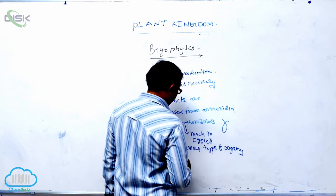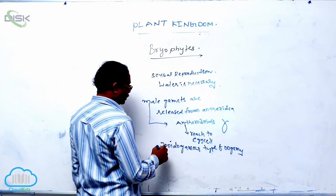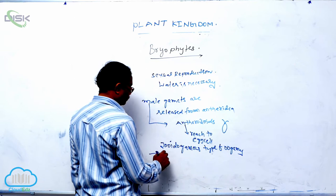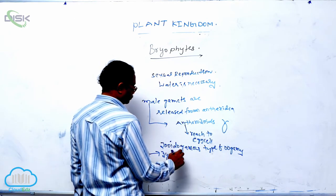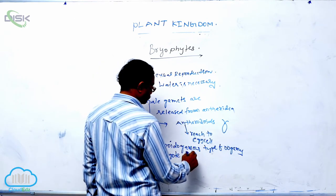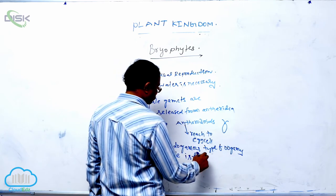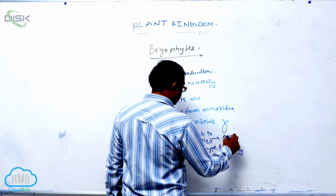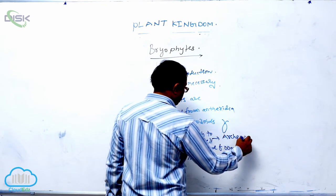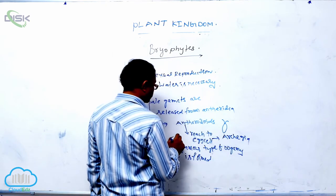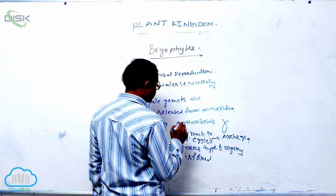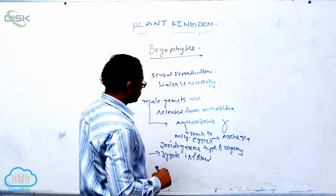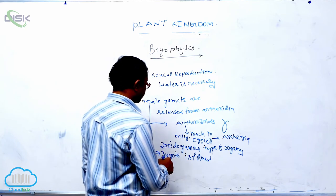After fertilization, zygote is formed. The egg cell is present in that archegonium, only single egg cell. Archegonium having that only single egg cell. That is known as zooidogamous type of oogamy, zygote is formed.